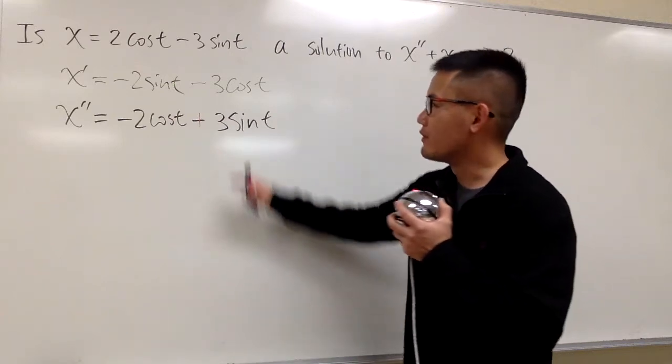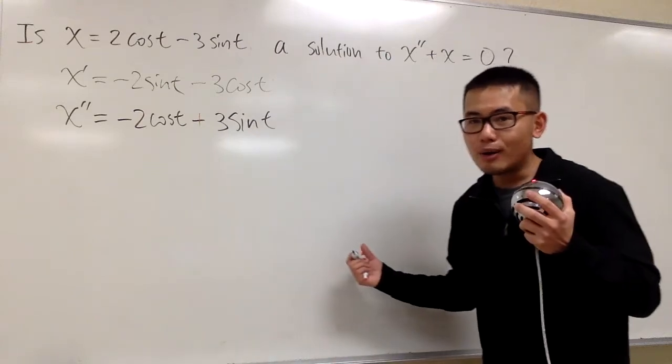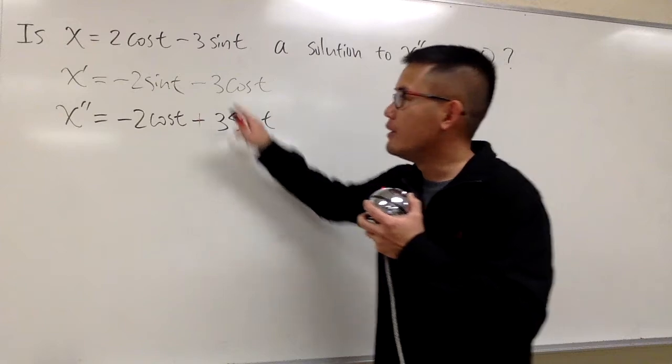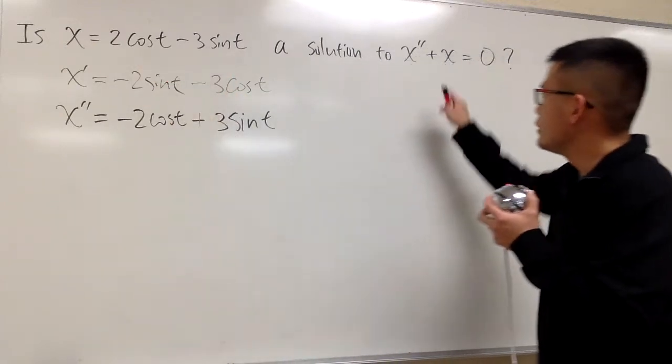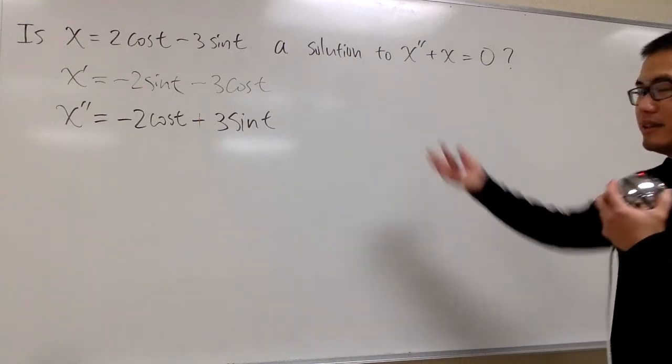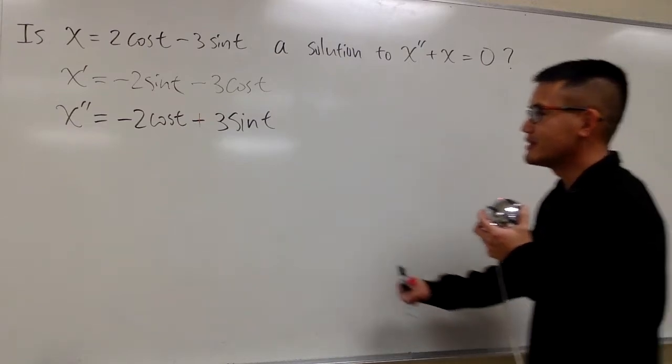The derivative of negative 3 cosine t is positive 3 sine t. And now, all we have to do is plug in the second derivative, and also the original, into this equation, and we'll verify if this is correct or not. If it's correct, then it is a solution. If it's not, then it's not a solution. So, let's get to work.